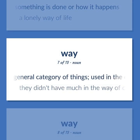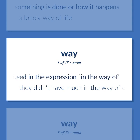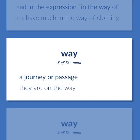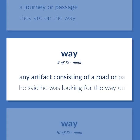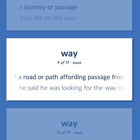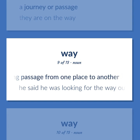A general category of things, used in the expression 'in the way of.' They didn't have much in the way of clothing. A journey or passage. They are on the way. Any artifact consisting of a road or path affording passage from one place to another. He said he was looking for the way out.